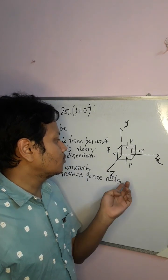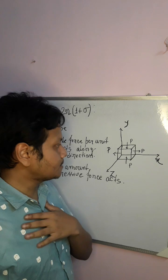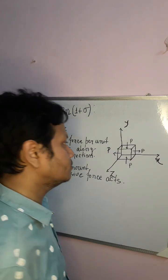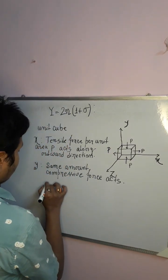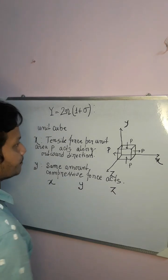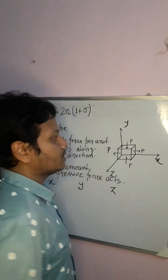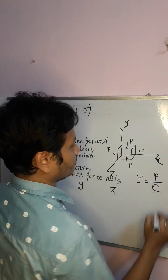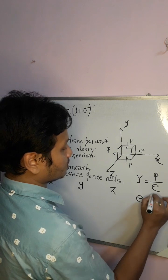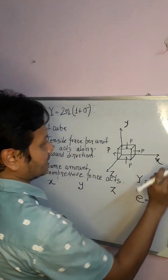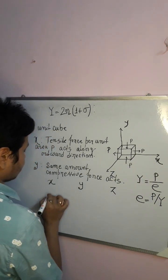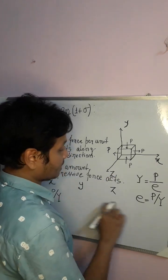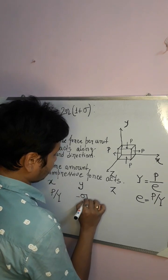Along the z-axis we apply nothing. So these two equal and opposite forces will have an impact on three axes. Along the x-axis we apply a tensile force per unit area, so strain E equals P divided by Y. Due to the tensile force there is an extension along the x-axis equal to P/Y, and a compression along the y and z axes equal to minus sigma times P/Y.